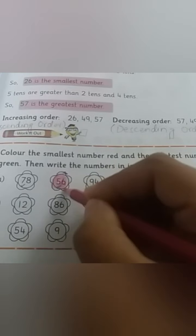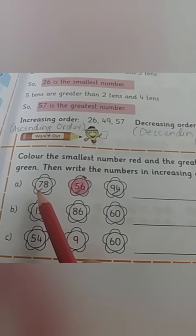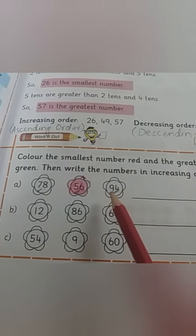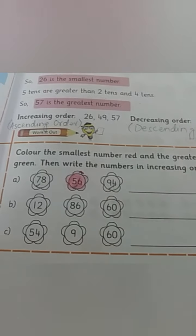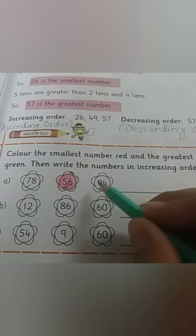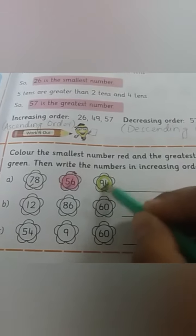So 5 is the smallest number. 56 ko hum red color karenge. Okay, we will color this as red, as this is the smallest number. Now bada sab se kaun sa hai? 78 or 94? 94, because 9 bada hai 7 se. So we will color this as green. Isko hum green color karenge. We will color this as green. We can color this green or this green. We can color both of them.